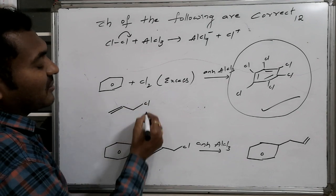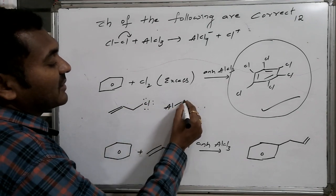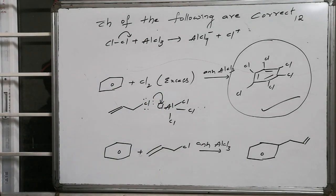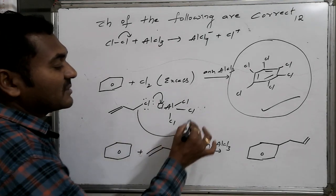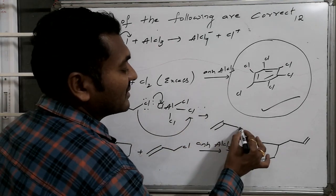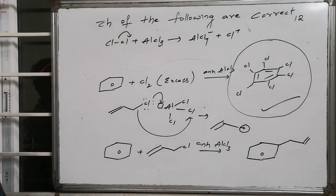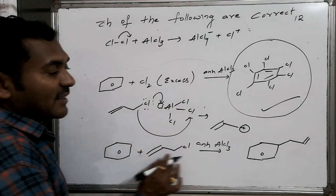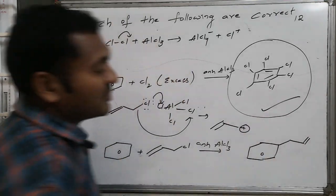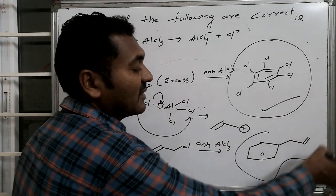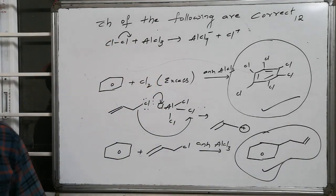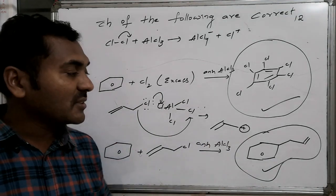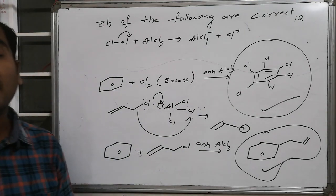For option 4, allyl chloride reacts with AlCl₃. AlCl₃ takes the lone pair of electrons on the chlorine, and the system eliminates to generate a stabilized allyl cation along with AlCl₄⁻. The allyl cation attacks benzene, resulting in the formation of allyl benzene. Hence, allyl benzene formation and hexachlorobenzene formation are both possible, but the other two are not.